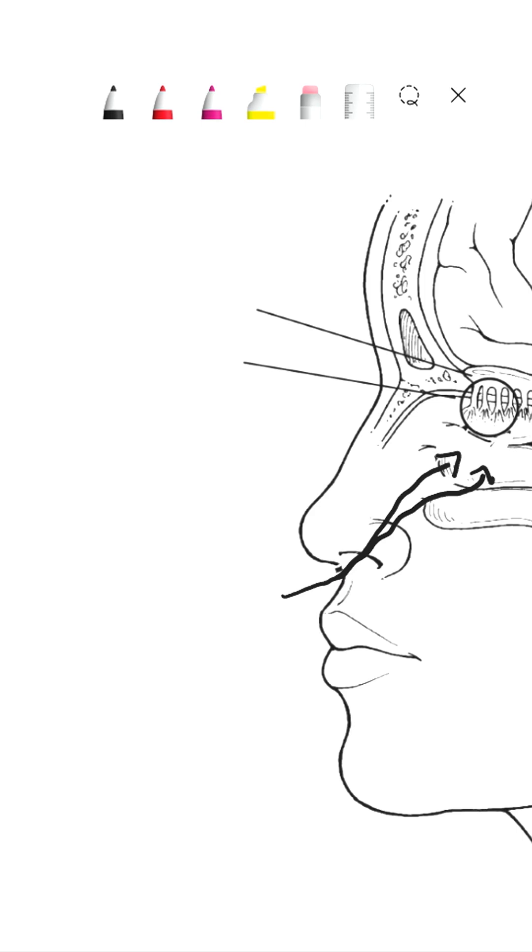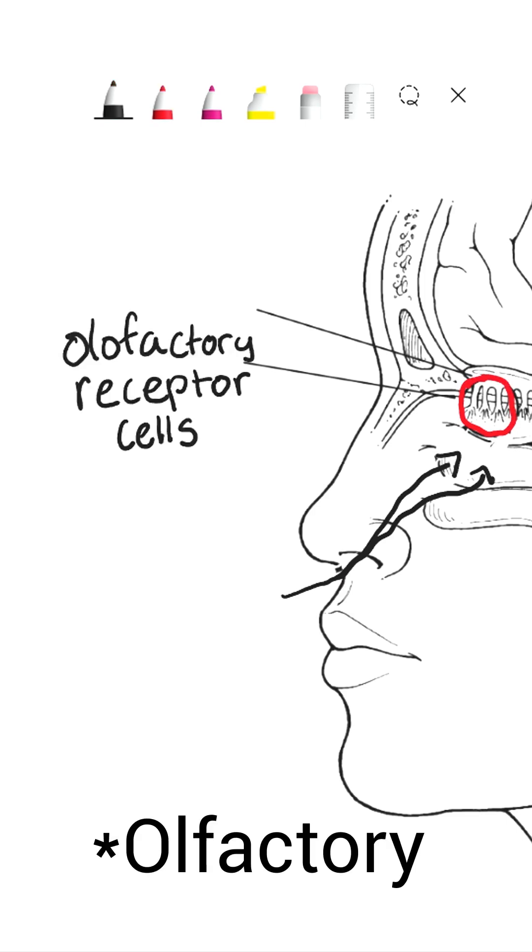These molecules are then absorbed by the olfactory receptor cells, which are found right here, and these olfactory receptor cells are connected to something called the olfactory bulb.